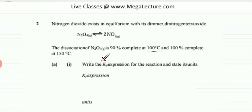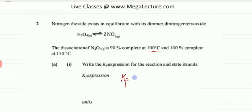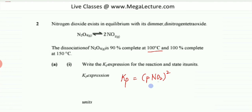The first part of the question asks you to write the Kp expression for the reaction. Kp equals the partial pressure of the products — in this case NO2, squared because the coefficient becomes the exponent — divided by the partial pressure of N2O4.